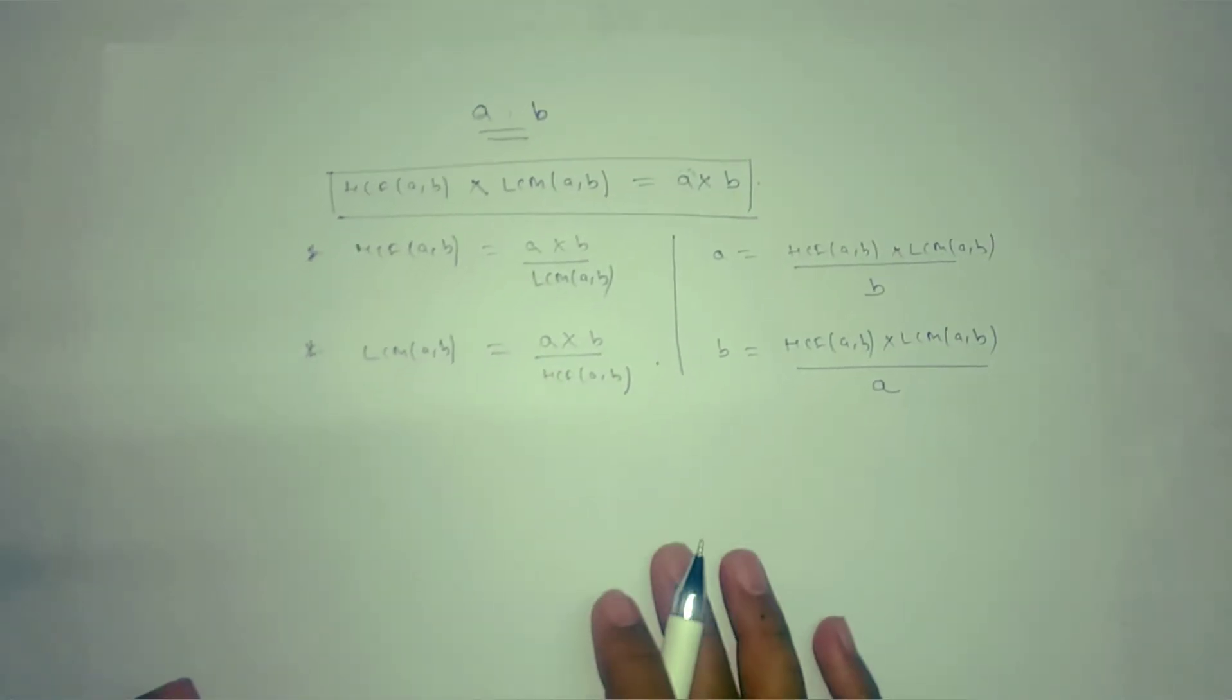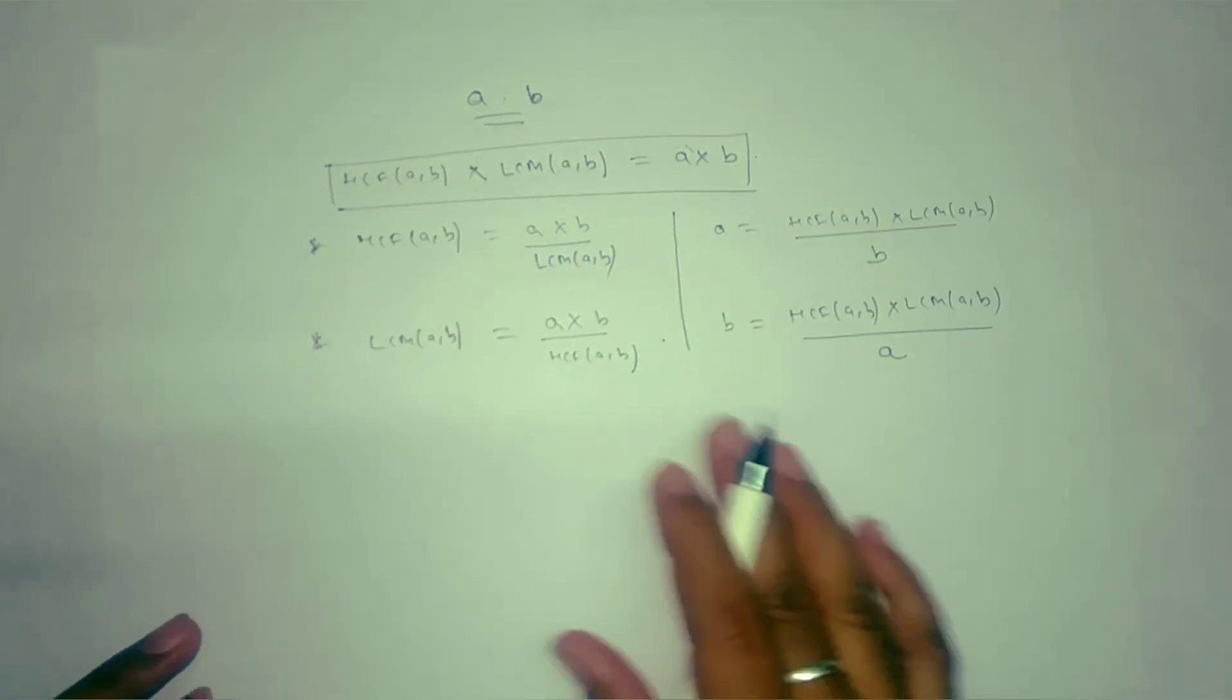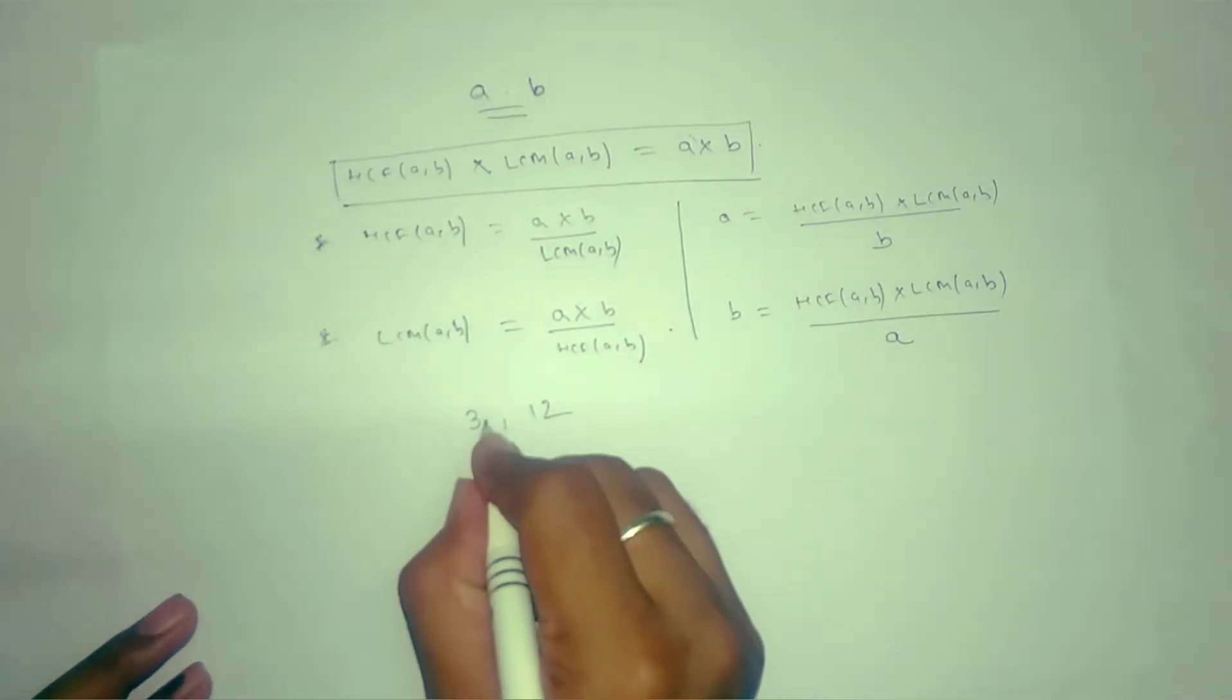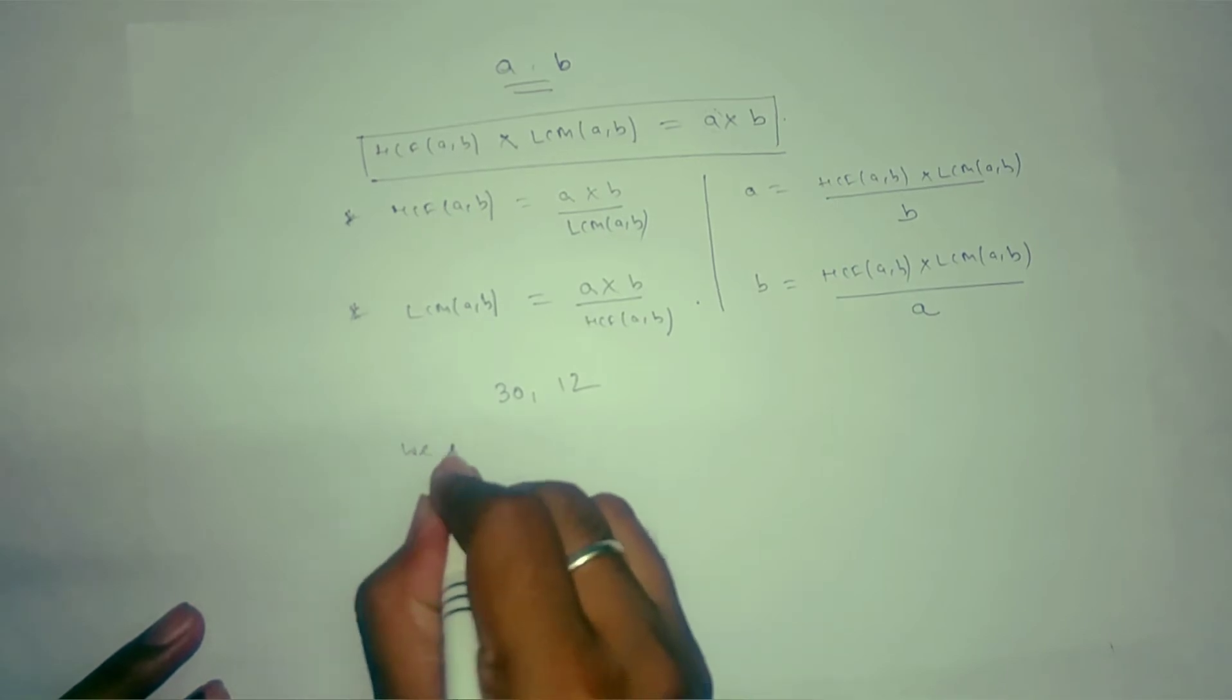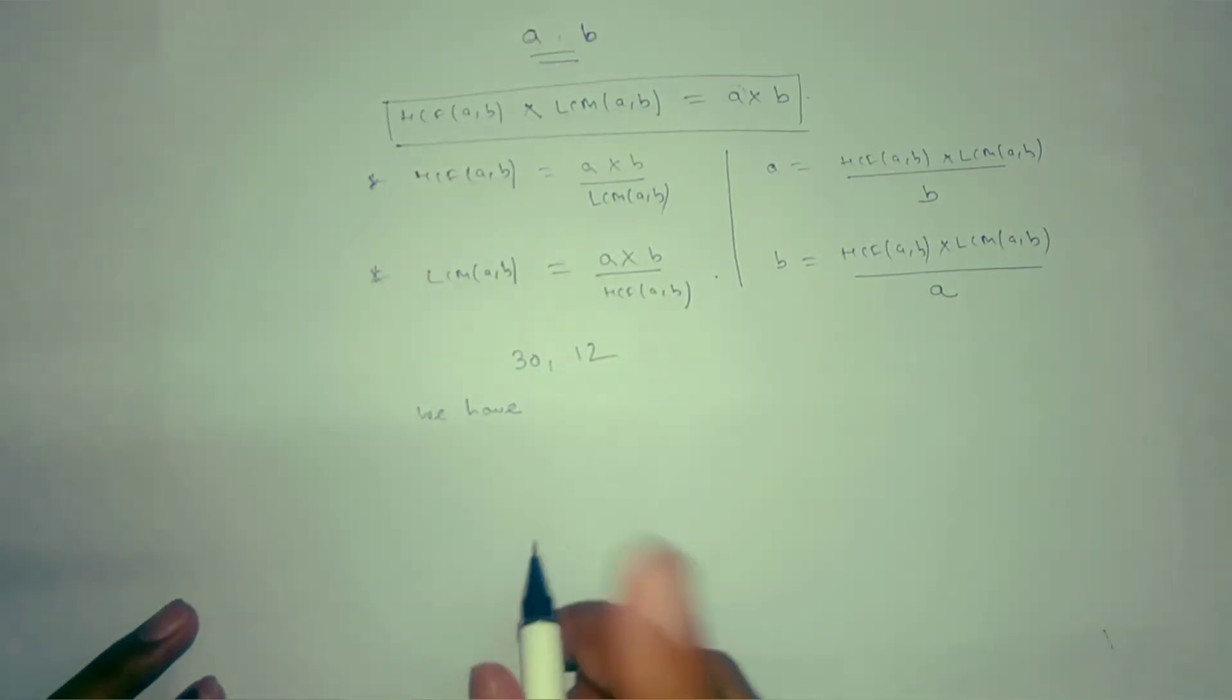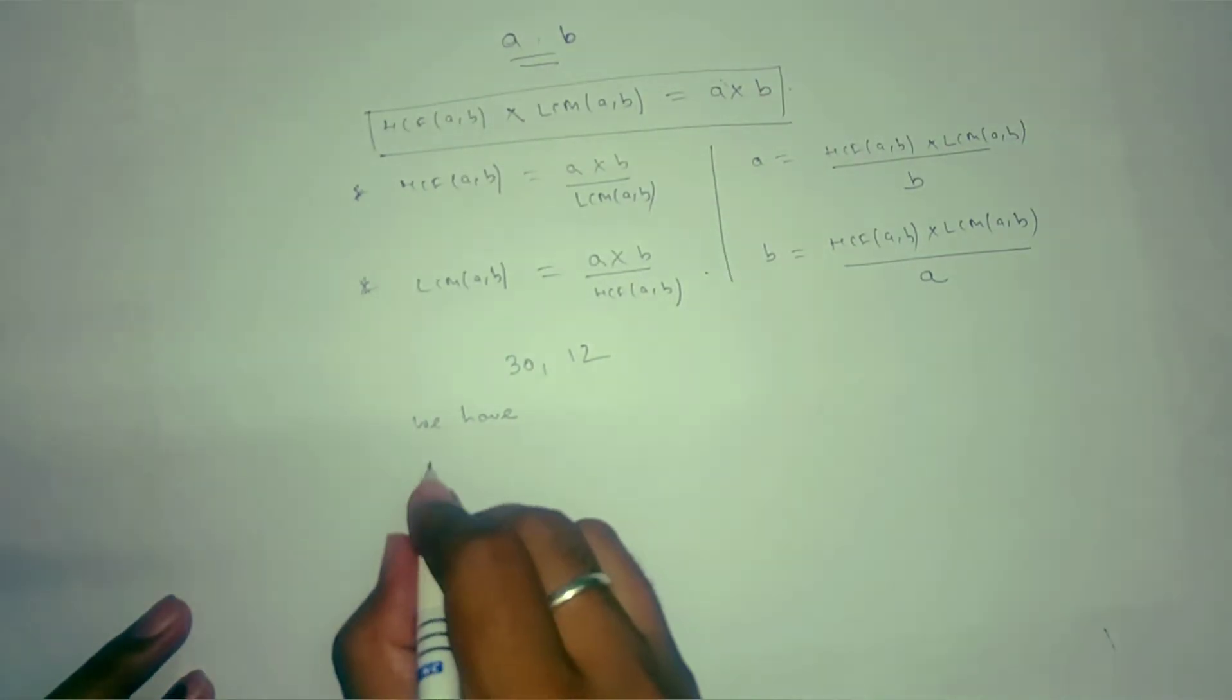Now try to understand with an example the meaning of this relationship. If you take two numbers like 30 and 12, we will use the prime factorization method to find HCF and LCM of these two numbers. Remember this is valid only for two numbers, not more than that.